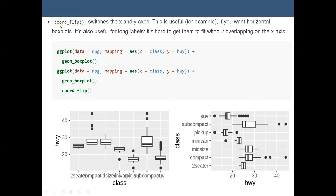The function to use is called coord_flip or coordinate flip function. This means we are switching the X and Y. So if I want to switch the X and Y axis, I may use the coord_flip switch. This is useful if you want horizontal boxplots. It's also useful for long labels. It's hard to get them to fit without overlapping on the X axis so we can switch it.